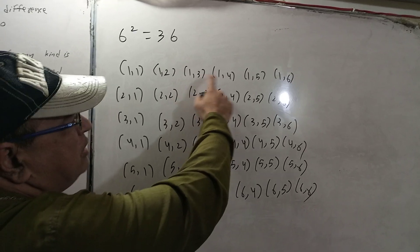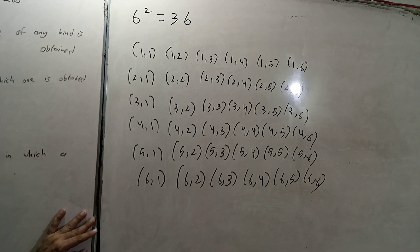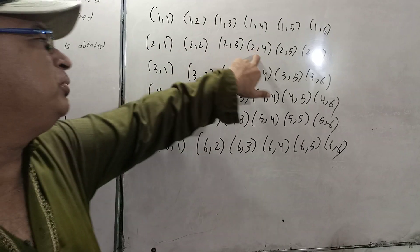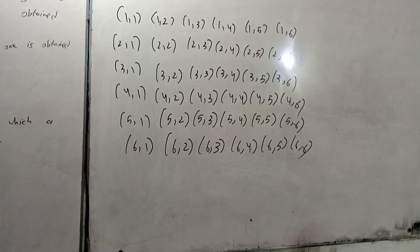Enumerating all outcomes: (1,1), (1,2), (1,3), (1,4), (1,5), (1,6), then (2,1), (2,2), (2,3), (2,4), (2,5), (2,6), continuing through all possible combinations. These are the 36 events in our sample space.